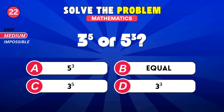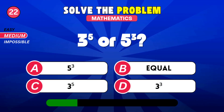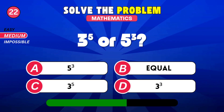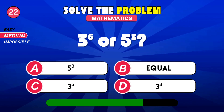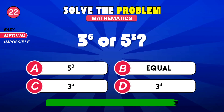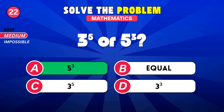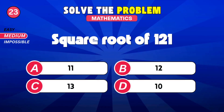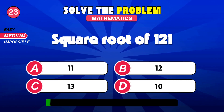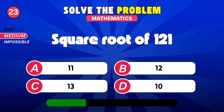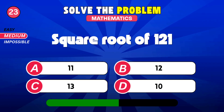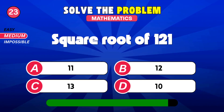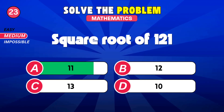Greater: 3 cubed or 5 cubed? 5 cubed. Square root of 121. 11.